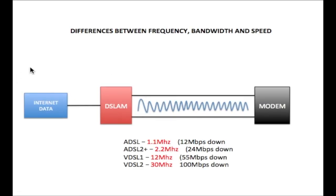On this slide we're going to discuss the difference between frequency, bandwidth, and speed. I'm going to use a DSL line as an example. We have internet data connected to a DSLAM, which stands for Digital Subscriber Line Access Multiplexer. This DSLAM is within the central office connected to a modem at the customer's premises using twisted pair cable.